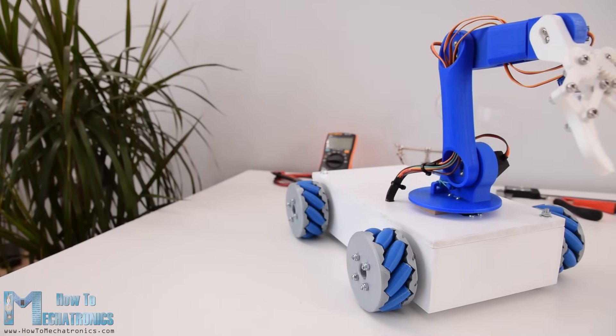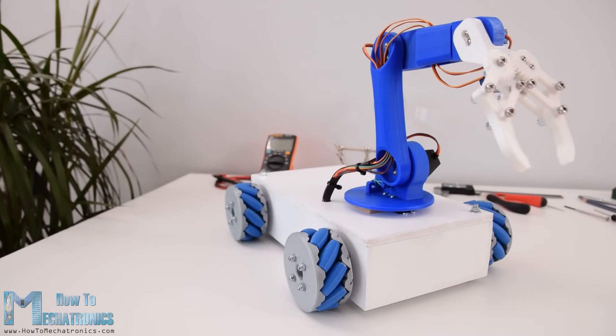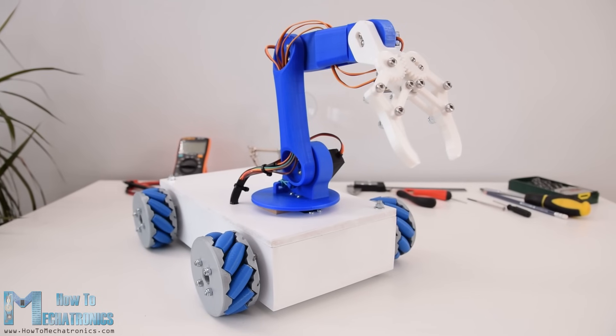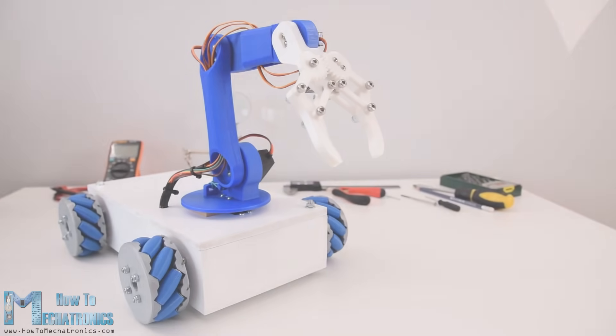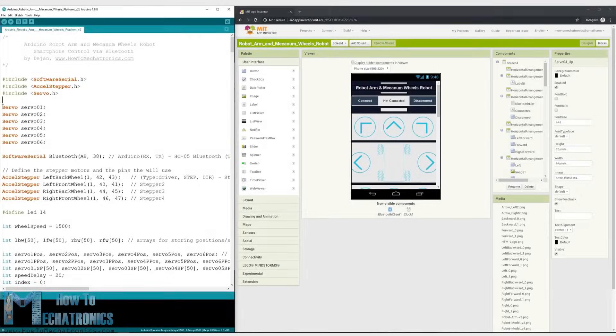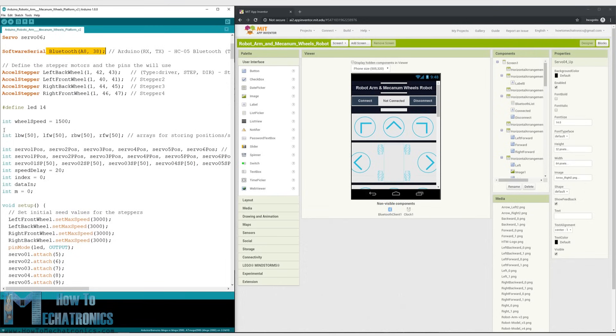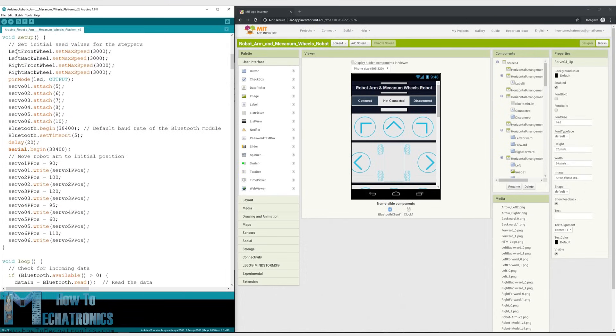Now we are done with this project but what's left in this video is to take a look how the Arduino code and the Android application work. So first we need to define the 6 servos, the 4 stepper motors and the Bluetooth communication, as well as some variables needed for the program below. In the setup section we set the maximum speed of the stepper motors, define the pins to which the servos are connected, begin the Bluetooth communication and set the robot arm to its initial position.